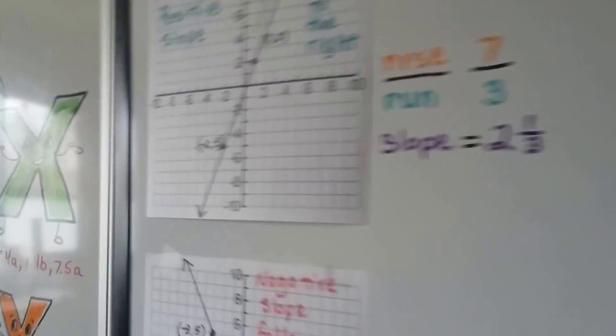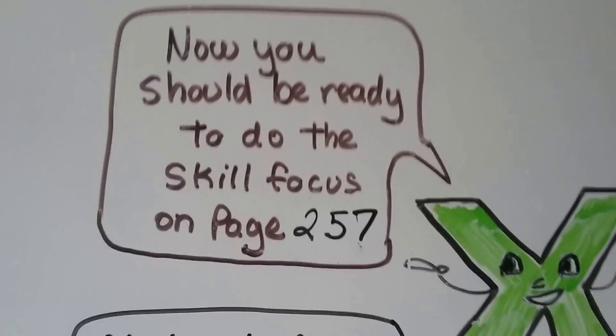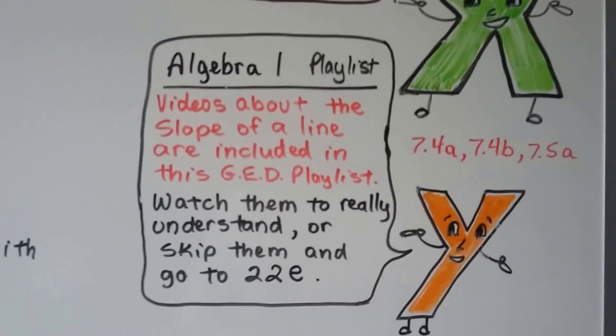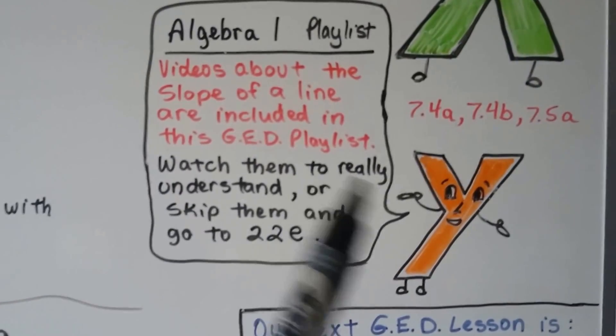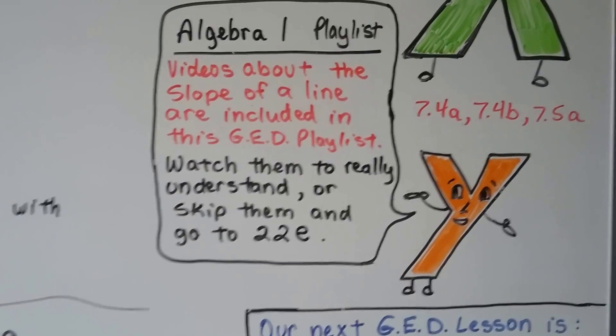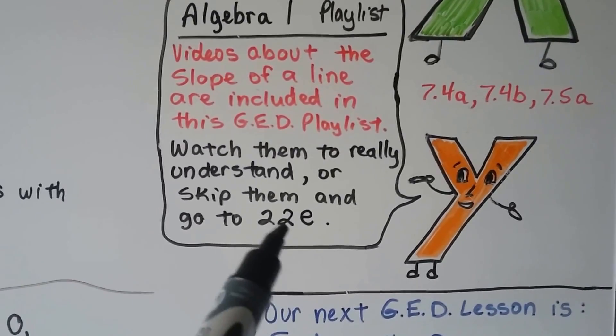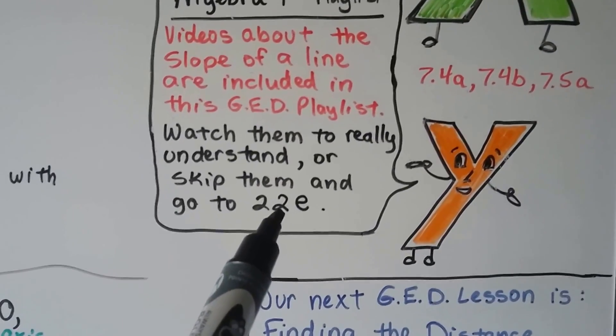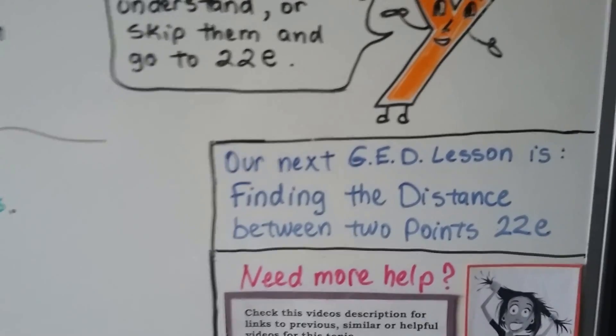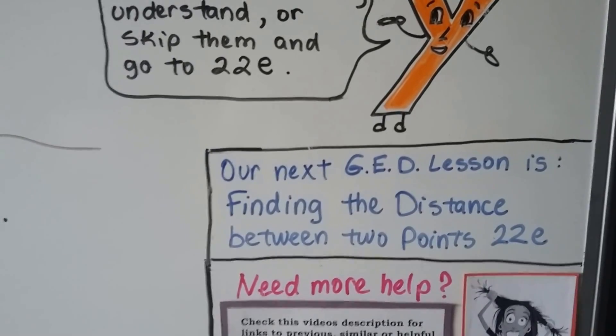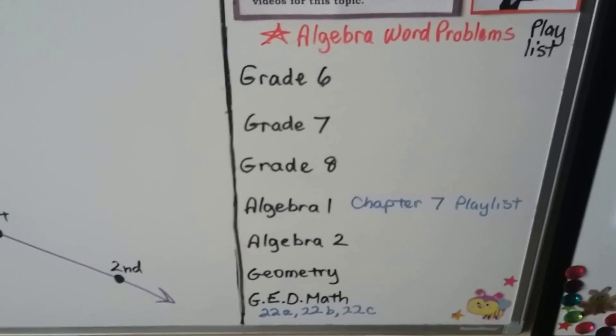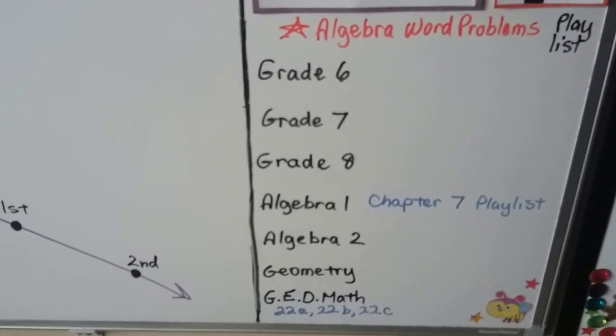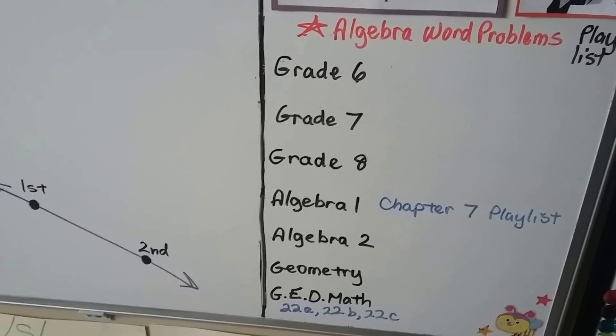So you should now be ready to do the skill focus on page 257. And following this video are going to be three videos from my Algebra 1 playlist that I'm including into this GED playlist. So watch them if you really want to understand about slope. And if you don't want to watch them, you can just skip down through the playlist to lesson 22E where we talk about finding the distance between two points, and we're going to use the distance formula. It's lesson 22E. And don't forget, I've got the entire playlist of algebra word problems that'll help you. And of course, I'll have those links to the previous videos and helpful ones in this description.